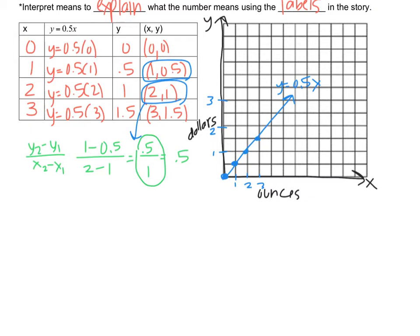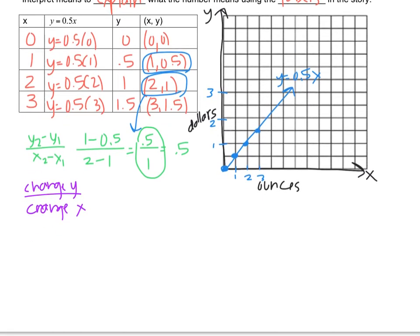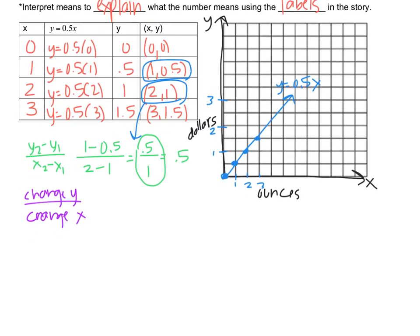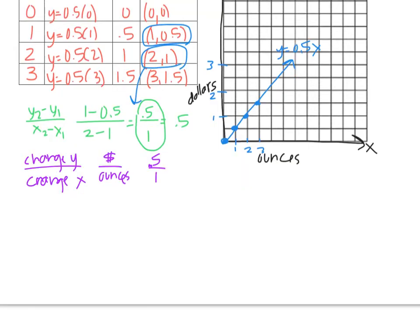The label for the y values, if I remember, slope is change in y over change in x. So 0.5 over 1 means 0.5 dollars and 1 ounce. Well, 0.5 dollars is 50 cents. So that makes sense.